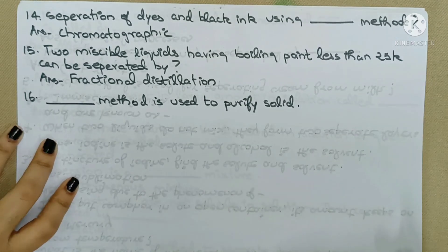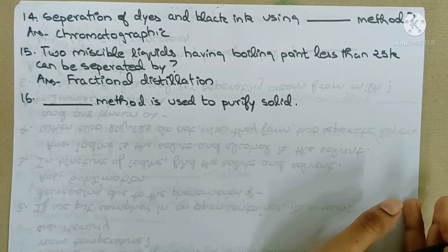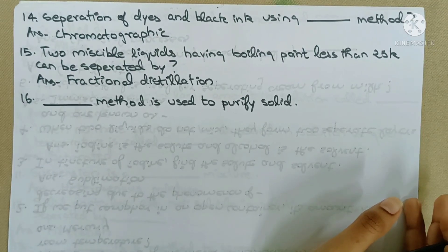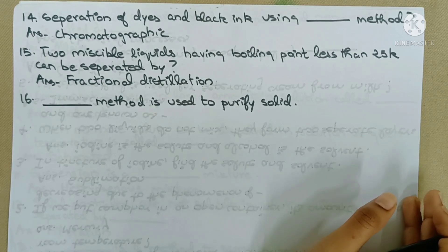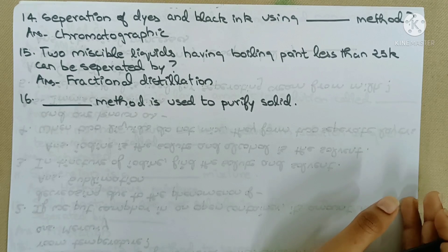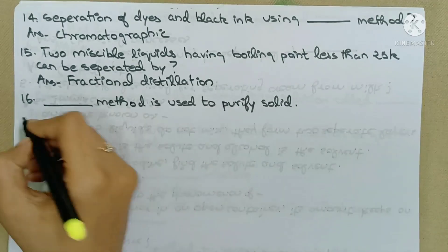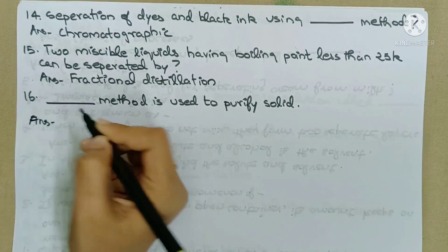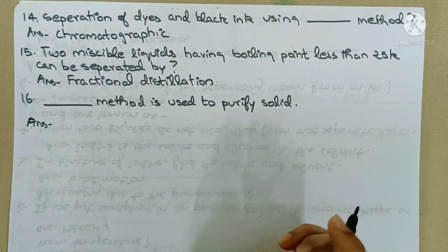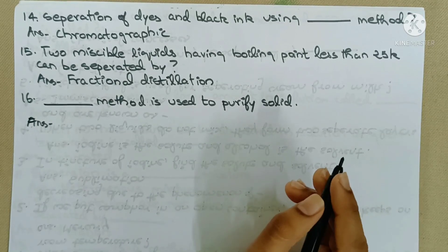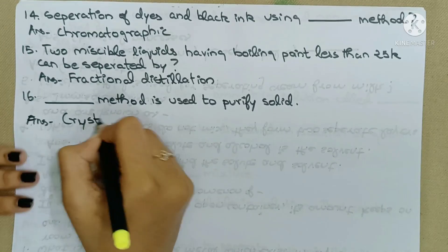Next question: Which method is used to purify solids? As written in the textbook, purification of copper sulfate uses crystallization. This dissolve-and-recrystallize method is used to purify solids — we use the crystallization method.